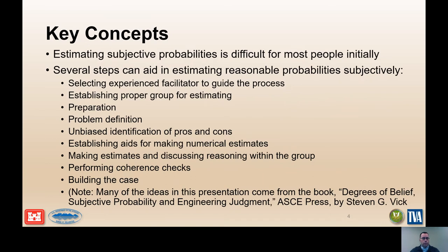The key concepts include that estimating subjective probabilities is difficult for most people initially. Several steps can aid in estimating reasonable probabilities subjectively. These include selecting experienced facilitators to guide the process, establishing proper groups for estimating, preparation, problem definition, unbiased identification of pros and cons, establishing aids for making numerical estimates, making estimates and discussing reasoning within the group, performing coherence checks, and building the case.